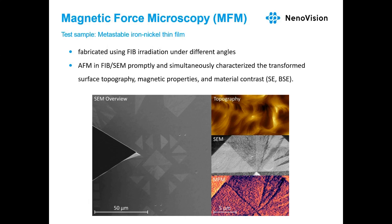An example is a metastable iron-nickel thin film prone to oxidation in air, so the structure was fabricated using focused ion beam irradiation under different angles inside the SEM, and the AFM probe was immediately navigated to characterize the magnetic and topography signal together with secondary electrons. In the SEM and MFM images there are different phases and different magnetic domains for each irradiation angle. In the MFM signal, brighter and darker spots are visible where the domain direction changes across the out-of-plane direction toward or away from the surface.